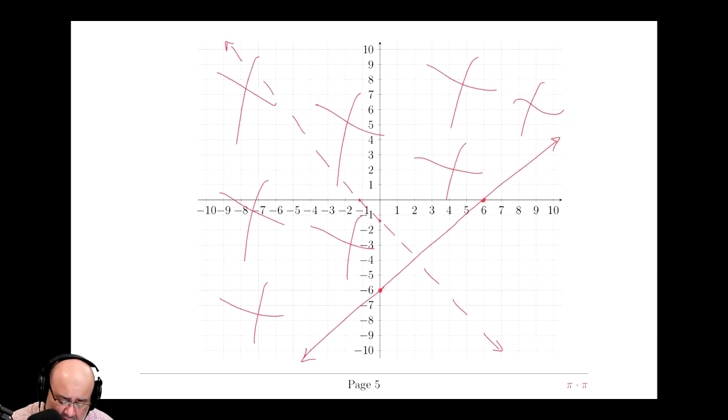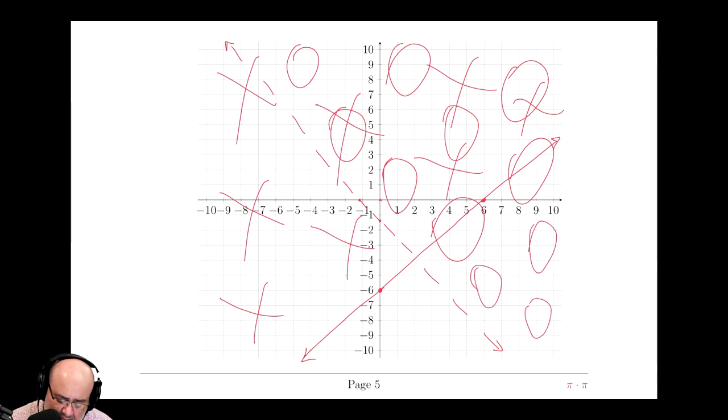So I shade on the side of the origin, which means all of this gets a circle. So now hopefully you recognize that this is not the solution for both inequalities because that's where just the crosses are. This is just where the circles are, so that's not the region of overlap.